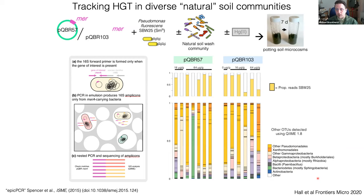We're a little wary about this data because of the difficulties of doing EPIC-PCR, but it proves that these plasmids do disseminate broadly even in this relatively simple soil community — a lab system rather than a completely natural system.